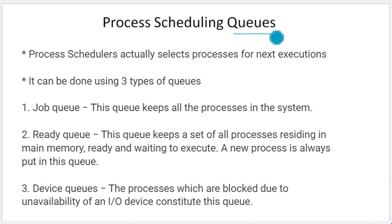We use queues. What are queues? Queues are a data structure which works on the phenomenon of first in, first out. So, the first data that comes in, we will process that data first.